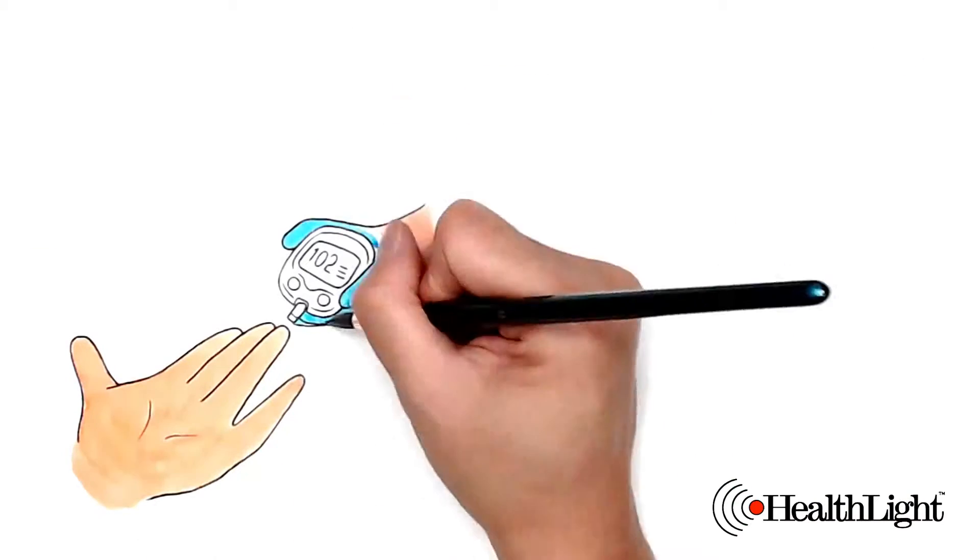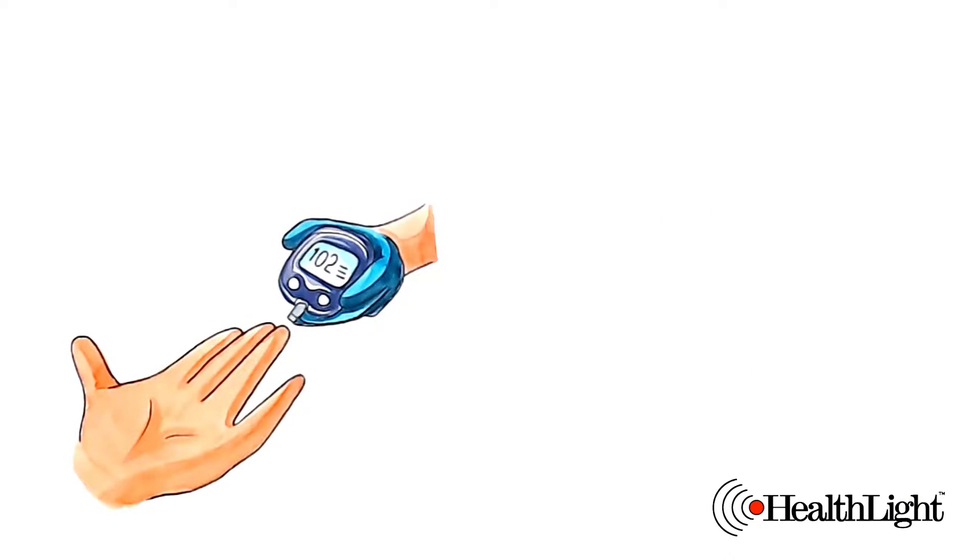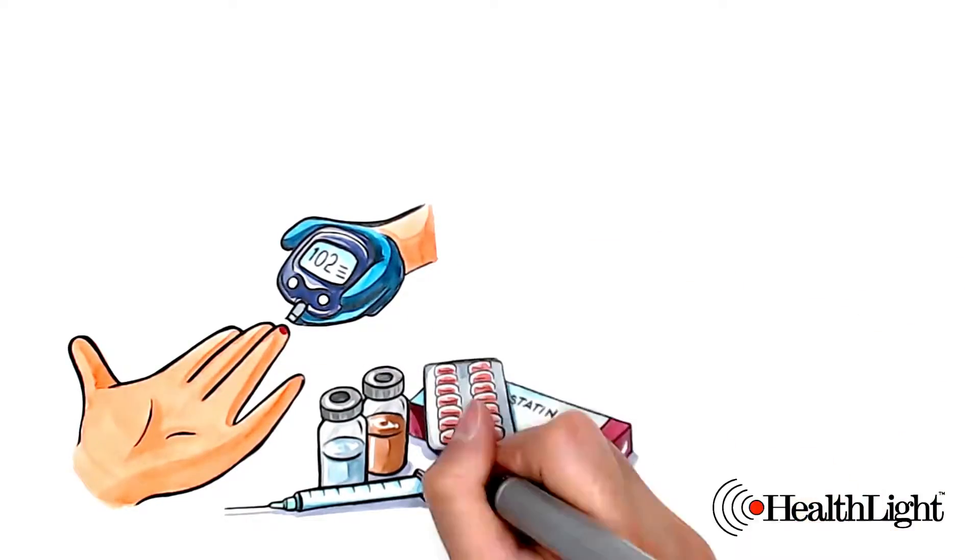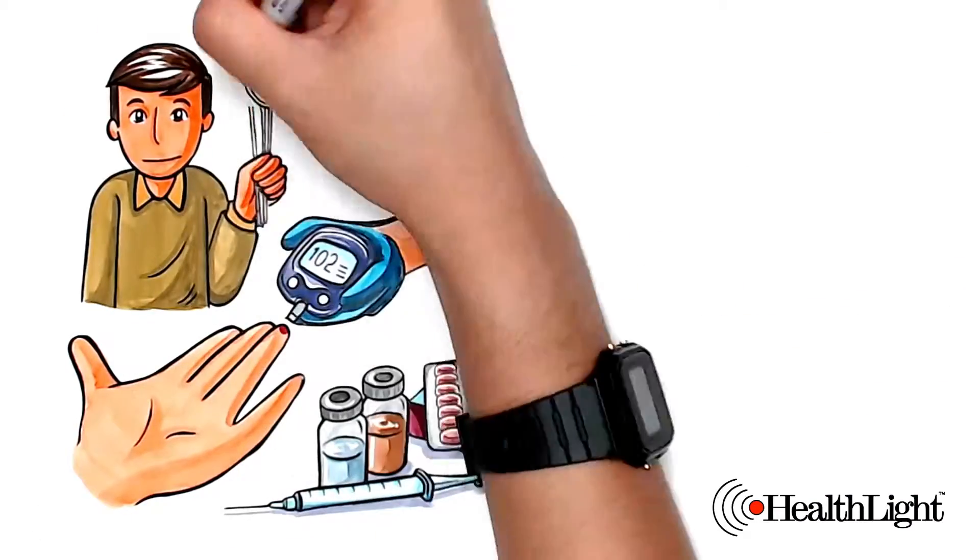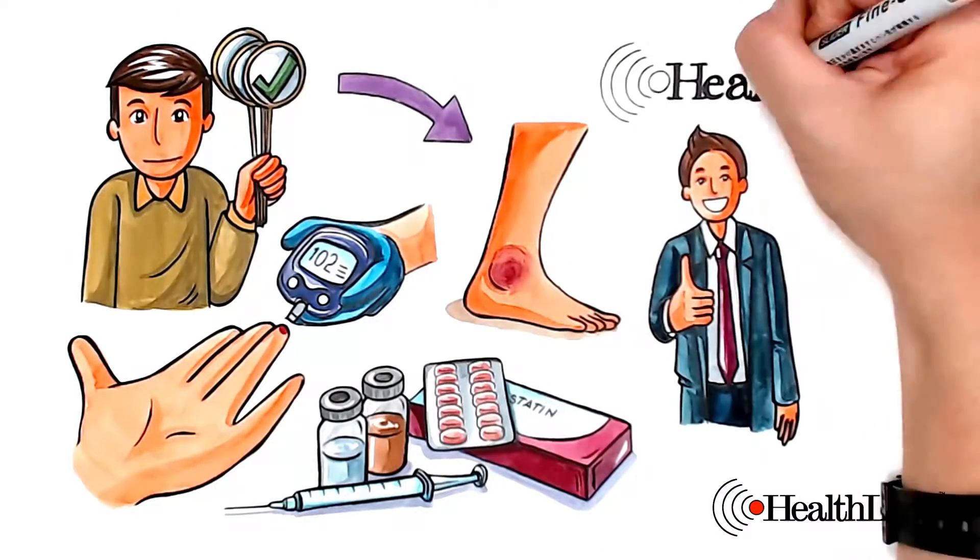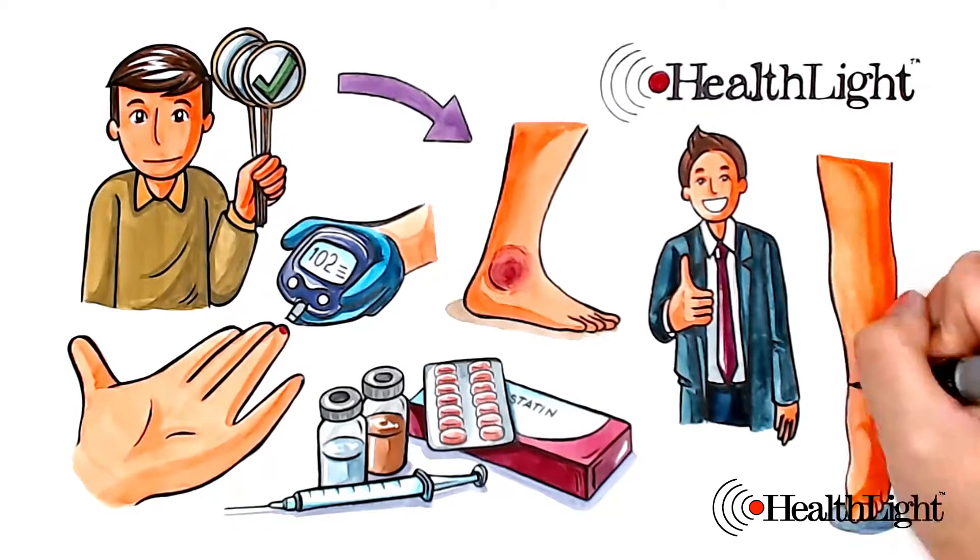Commonly reported causes of peripheral neuropathy are diabetes, chemotherapy, and statins, which are cholesterol drugs. People with any of these three contributing causes generally respond very well after using HealthLite to increase local circulation.